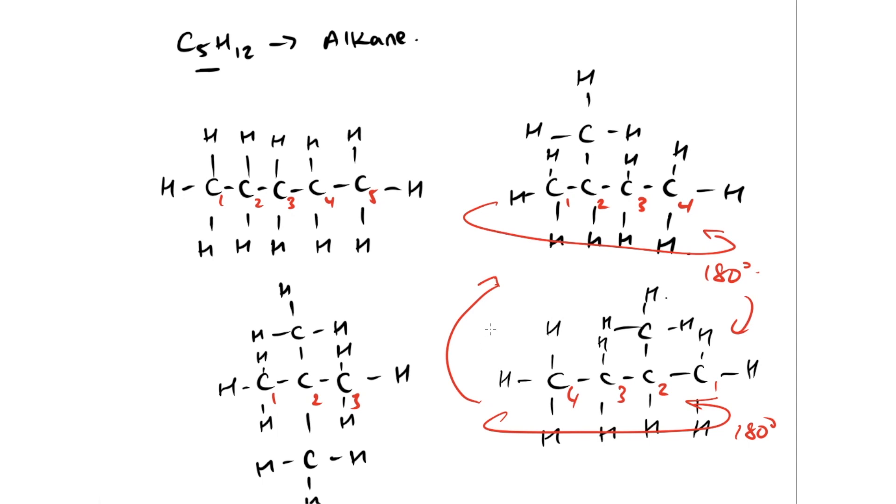So I hope this answers the question of drawing chain isomers. Essentially, you just draw the longest parent carbon chain, then you eventually cut down your parent carbon chain length down by one carbon at a time. Eventually you'll reach three carbons. That's when you stop. See you in the next video where we'll talk about position isomers.